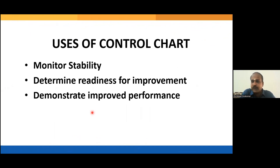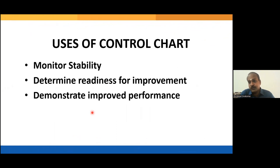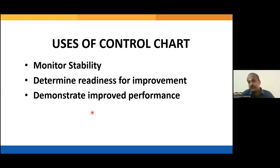The usage of control charts: number one, it helps you to monitor the stability of a process. Just as stability is important when treating a patient, when you are trying to improve a process, stability is important. If and only if the process is stable should you go for improvement. If the process is not stable, your goal should be to stabilize it — make your results consistent first.